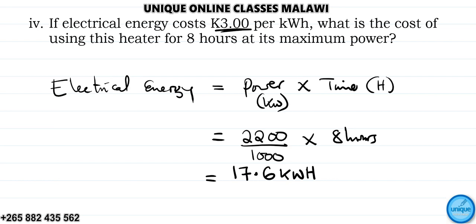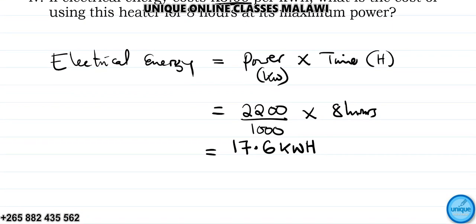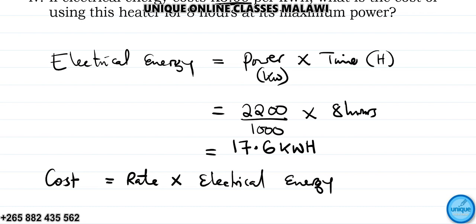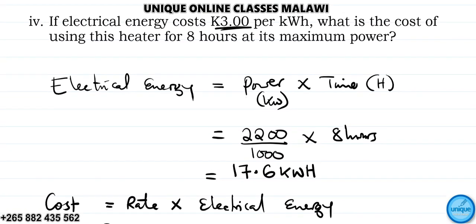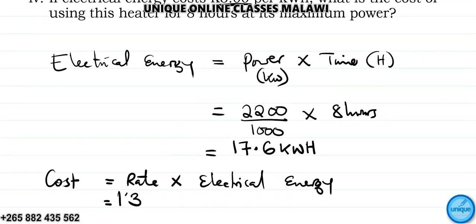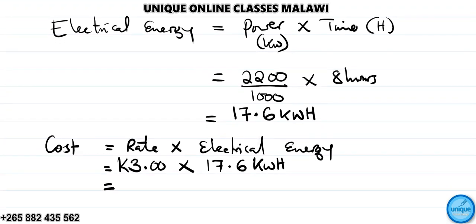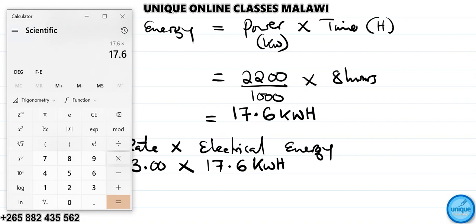We have 17.6 kilowatt-hours. The cost of electrical energy equals energy times rate. The rate is 3 per kilowatt-hour, so cost equals 17.6 times 3, which equals 52.8.